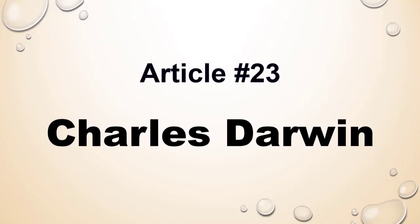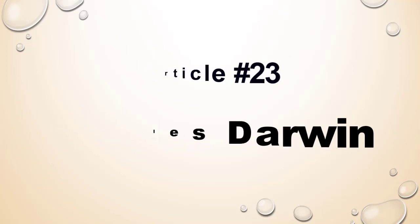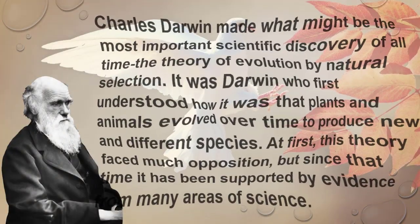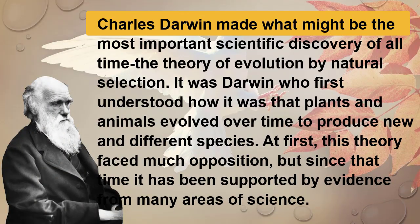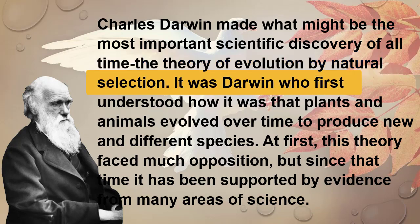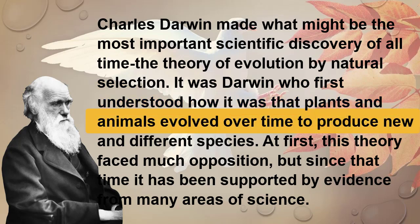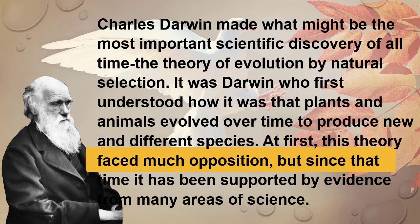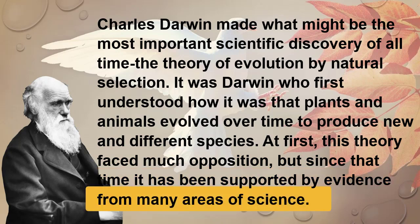Article number 23: Charles Darwin. Charles Darwin made what might be the most important scientific discovery of all time — the theory of evolution by natural selection. It was Darwin who first understood how plants and animals evolved over time to produce new and different species. At first this theory faced much opposition, but since that time it has been supported by evidence from many areas of science.